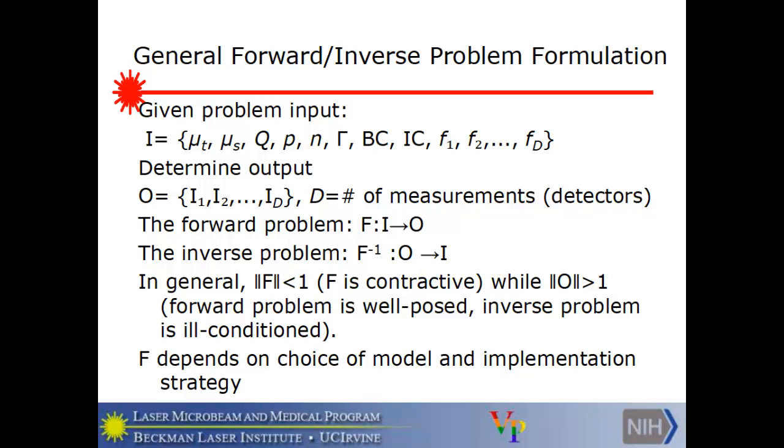Now the key to understanding why one is so much easier than the other is to look at that something called the norm. This function, which maps I and O, is an operator. As such, it has a norm. We can associate a size with it. And that norm is strictly less than one, because there is attrition of light, and without fluorescence there's no production of light. So the typical case is that norm is less than one, or the map is contractive.